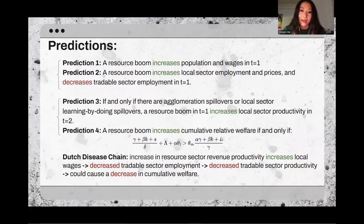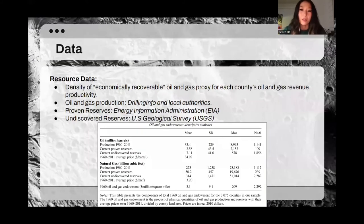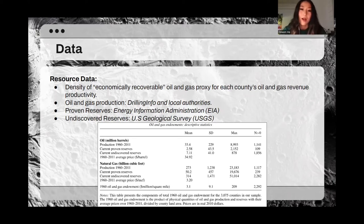Now that we have predictions to test using real data, this section explains what data sources the authors used and what variables they observed. For resource data, the authors proxied each county's oil and gas revenue productivity with the density of economically recoverable oil and gas in the ground before the analysis — an endowment determined only by geological factors exogenous to economic outcomes. Oil and gas production data are from a new county-by-year panel dataset from the 1960s to 2011 provided by Drilling Info, a market research company. Proven reserves data are from the Energy Information Administration (EIA), and undiscovered reserves are estimated by the U.S. Geological Survey.